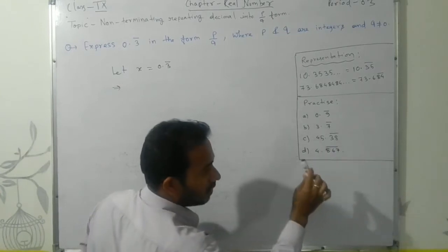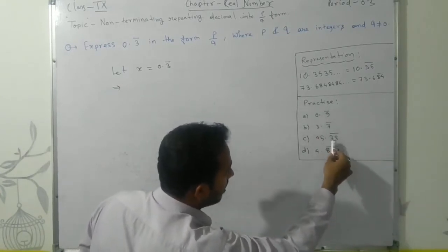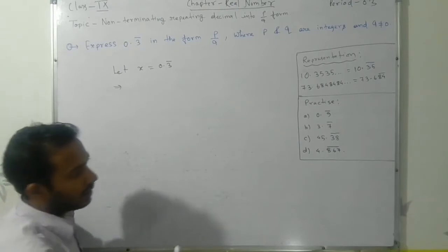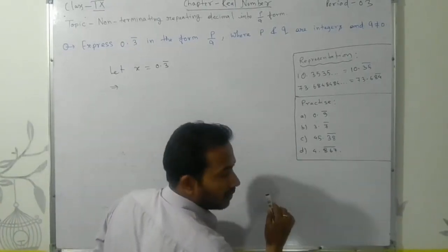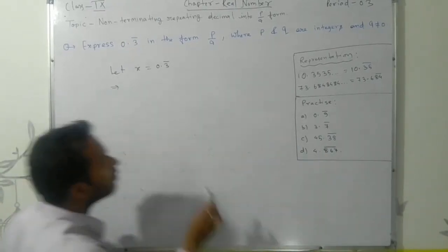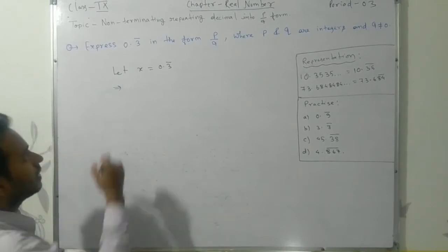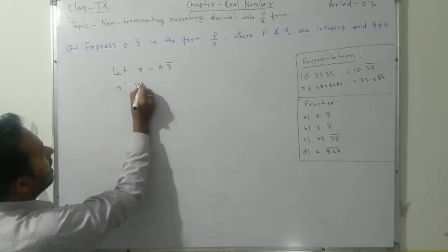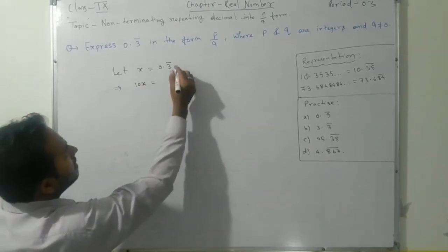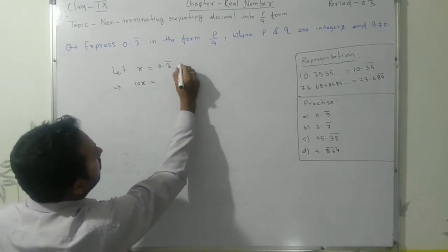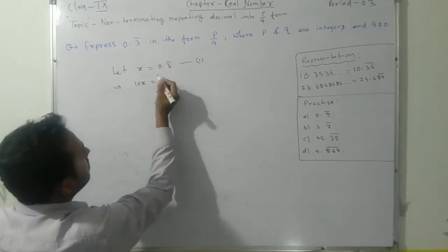If it's a two-digit number after the decimal, you multiply by 100. If three digits, multiply by 1000. So here we're going to multiply by 10. This is your first equation and this is your second equation.